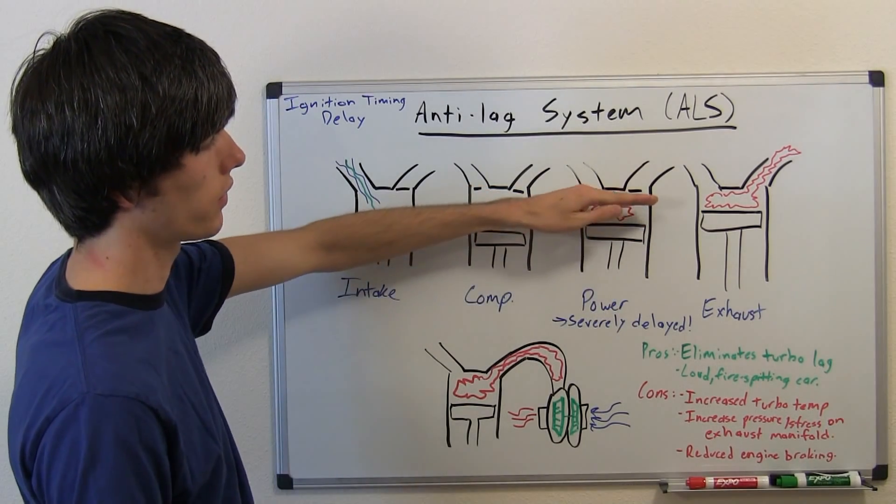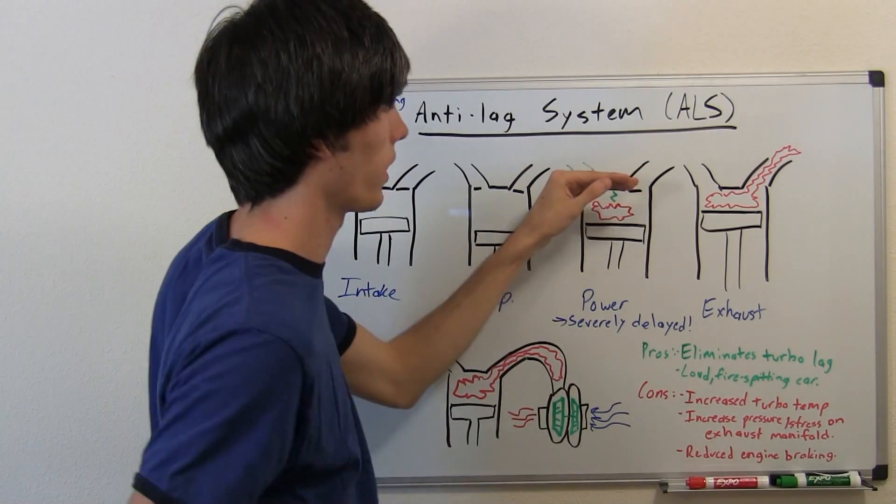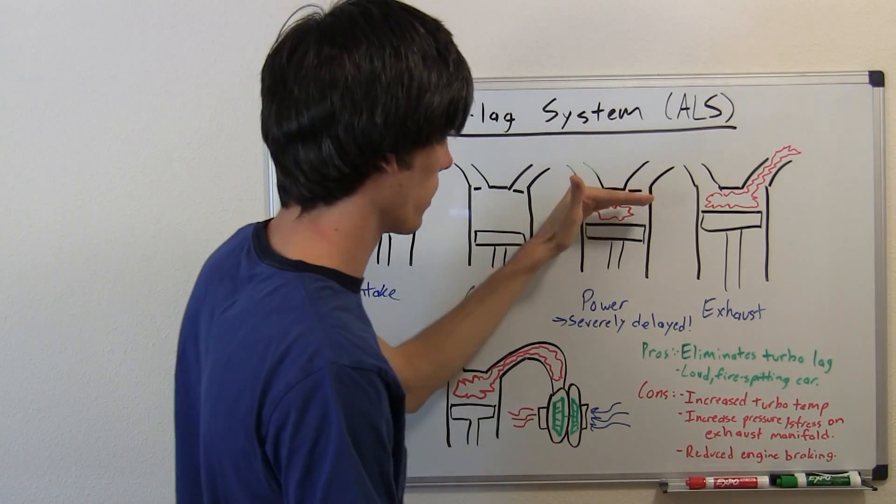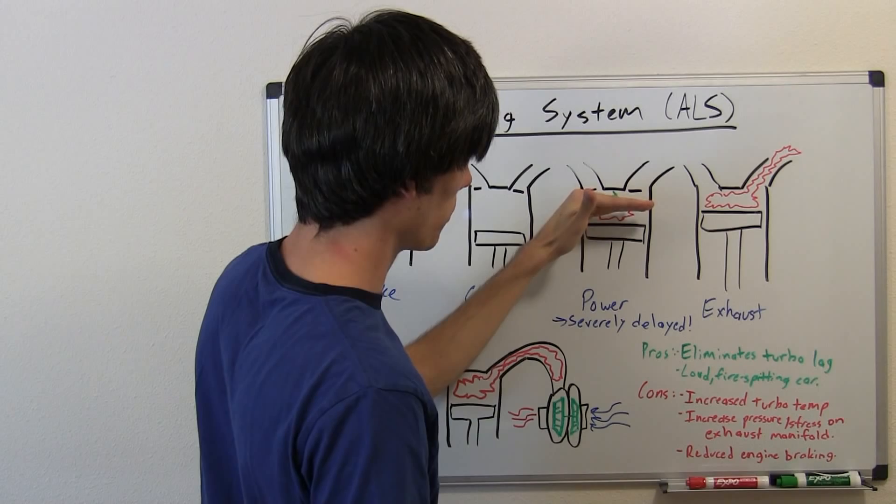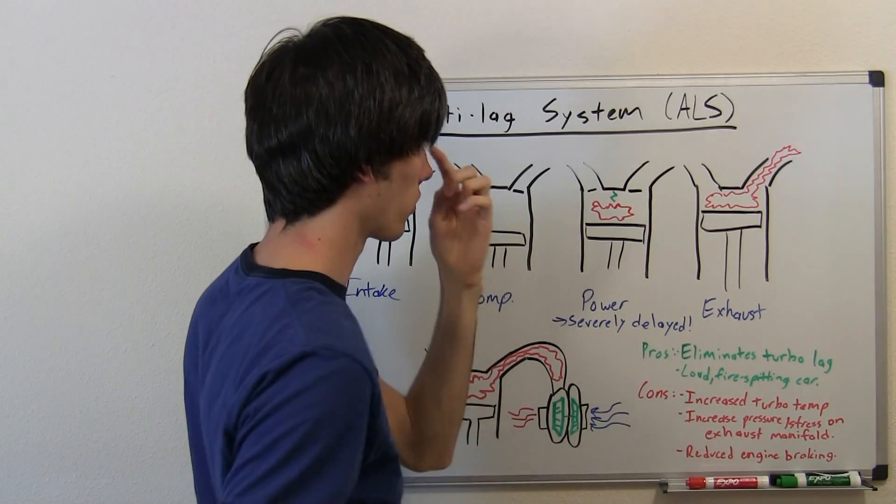Now normally when you hit around top dead center is when you're going to have your ignition, but your ECU is going to say, 'Hey, no, we're not going to do that—we're going to wait.' And so your piston is going to come down quite a bit before igniting, and then it's going to send the spark.